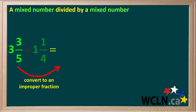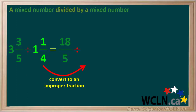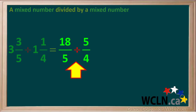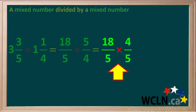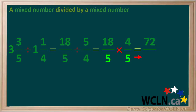We'll start by converting 3 and 3 fifths to an improper fraction, which comes out to 18 over 5. Then we'll convert 1 and 1 quarter to an improper fraction, which comes out to 5 over 4. So our question is 18 over 5 divided by 5 over 4. Dividing by the fraction 5 over 4 is the same as multiplying by its reciprocal, which is 4 over 5. So our question becomes 18 over 5 times 4 over 5. Neither of the diagonals simplify, so we just multiply: 18 times 4 gives us 72, and 5 times 5 gives us 25, leaving us with 72 over 25.